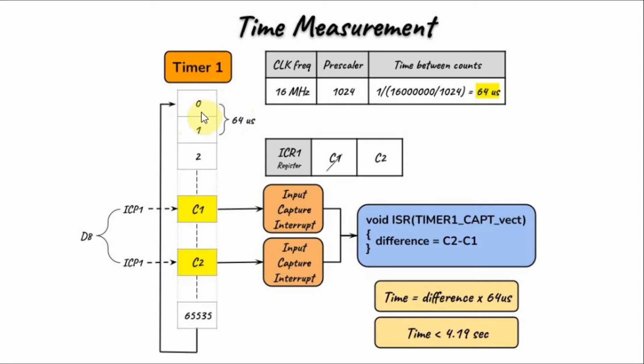Timer 1 will start counting from 0 all the way to this value. During the count when the first pulse arrives at pin D8, this count value is saved in the input capture register of Timer 1. Input capture interrupt occurs and this interrupt service routine is called and the captured value is saved.